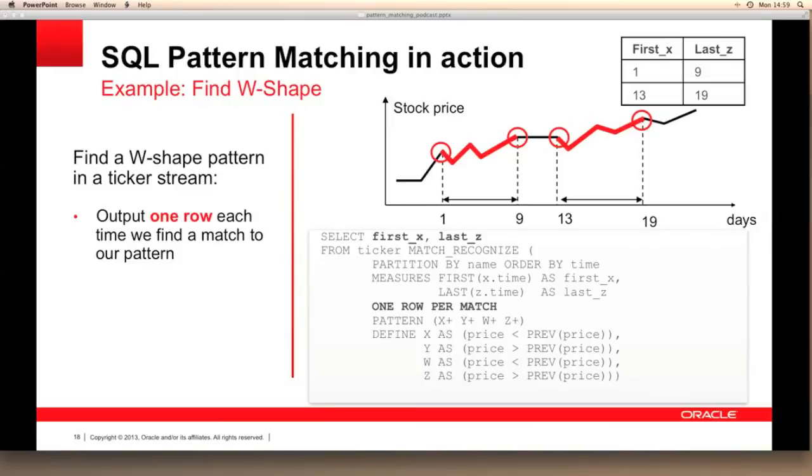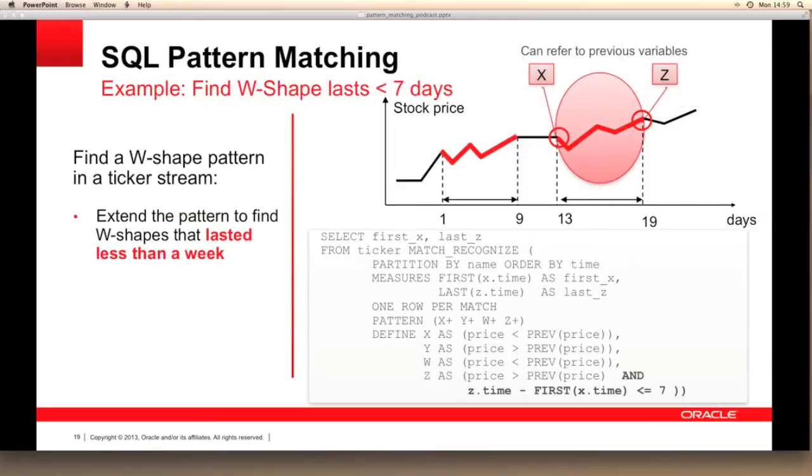Now we've determined what we're going to output and the level of detail. The next step is to find the patterns that last seven days or less and calculate the average price. To limit the results to those patterns that last seven days or less, we just add a new criteria to our define clause using the Z dot time and X dot time data points, as shown at the bottom of the statement in bold.